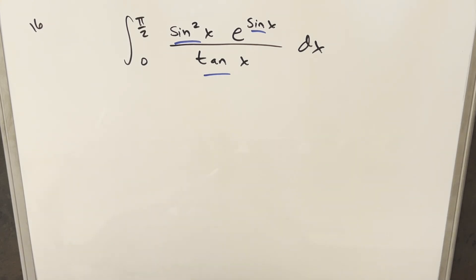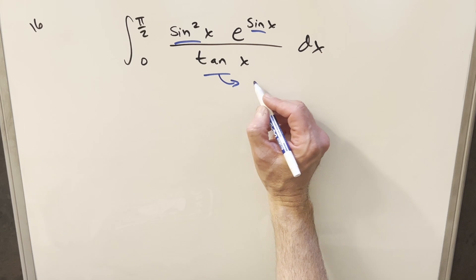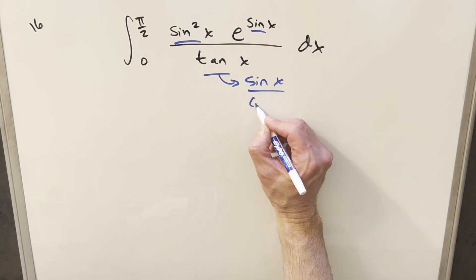Well, tangent doesn't work very well with sine. If we want to try to do any kind of u substitution, we want like everything sine cosine, or if we want to make a u substitution for tan, we need like secant squared somewhere. So what I want to do with this tan is let's just write it in terms of sines and cosines. So tangent is just going to be sine x over cosine x.